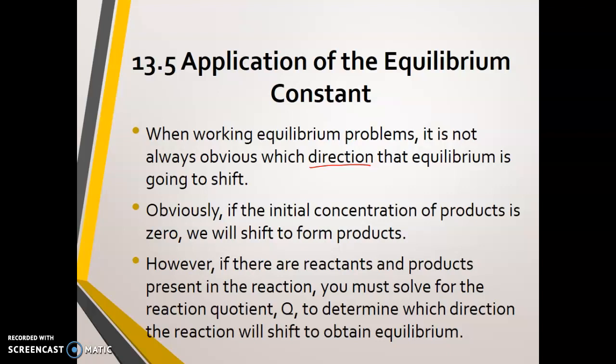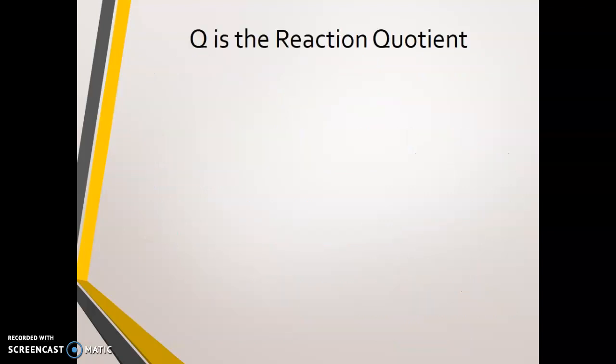Obviously, if the initial concentration of the products is zero, then your reaction will shift to form products so it'll go in the forward direction. However, if there are reactants and products present in the reaction, you must solve for the reaction quotient to determine which direction the reaction will shift in order to obtain equilibrium.